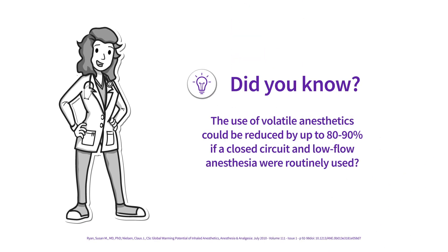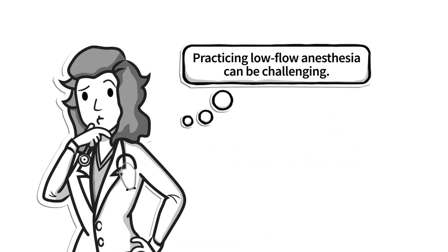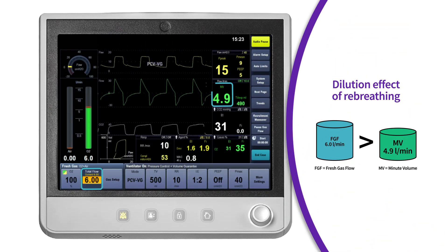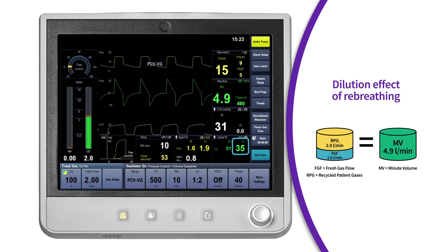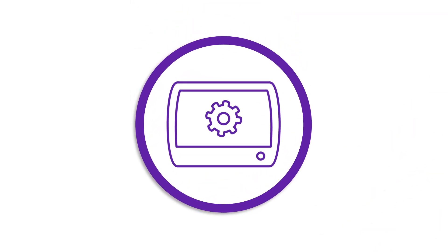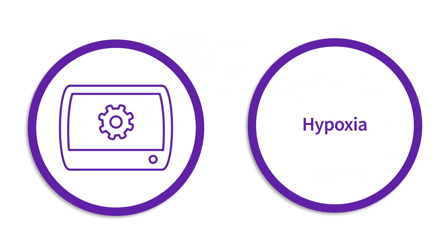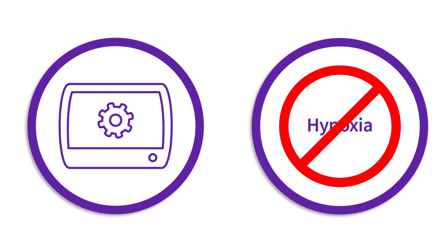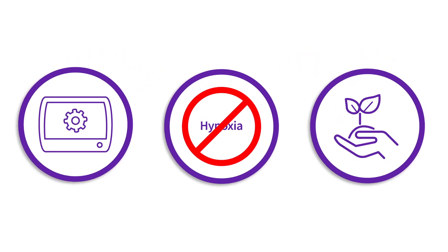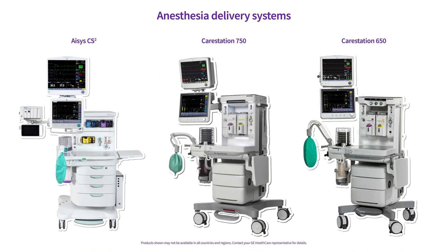Did you know that the use of volatile anesthetics could be reduced by up to 80 to 90 percent if a closed circuit and low flow anesthesia were routinely used? However, practicing low flow anesthesia can be challenging. As fresh gas flow is reduced, more recycled gas makes up the patient's delivered minute ventilation. As more recycled gas is consumed, the FiO2 decreases because oxygen is not being replenished from the fresh gas flow. What if you had a tool that could help guide you with lowering your fresh gas flows to help mitigate the risk of hypoxic delivery, avoid excess fresh gas flow, and help reduce the environmental impact of anesthetic agent use? Then EcoFlow may be your solution. This video will discuss the EcoFlow software found on specific GE anesthesia delivery systems.